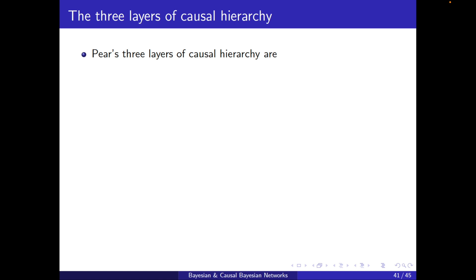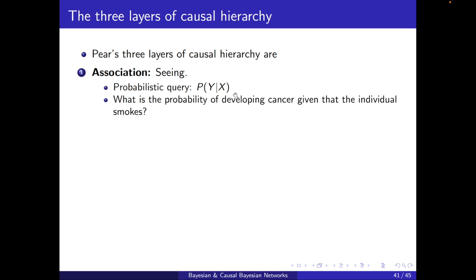Now that we have these three components defined, I want to introduce Pearl's three layers of causal hierarchy. The first one is association — seeing, observing. The type of queries are probabilistic queries: P of Y conditioned on X. An example is: what is the probability of developing cancer given that the individual is observed to smoke? This can be answered by any of the three: Bayesian network, causal Bayesian network, or structural causal models.